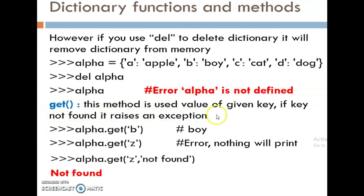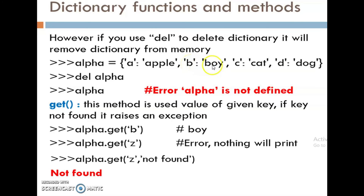The get function is used to get the value of a given key. If the key is not found, it raises an exception. Alpha.get('b') — that means boy. 'b' is the key, the value of 'b' is boy. The output is boy.